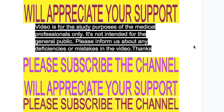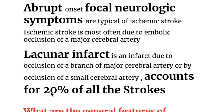In this video, we will discuss localization of ischemic stroke by clinical features. Abrupt onset focal neurologic symptoms are typical of ischemic stroke. Ischemic stroke is most often due to embolic occlusion of a major cerebral artery.